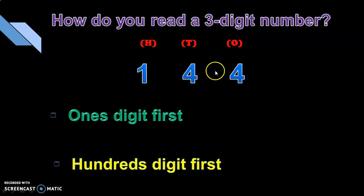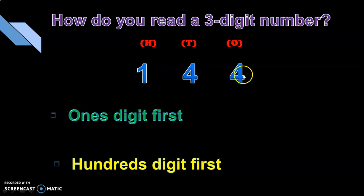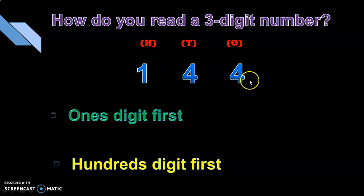How do you read this number? What is the number name for it? It is 1 hundred and 44. We don't read it as 4, 4, and 1, or any other wrong way. We always begin with the 100s place.